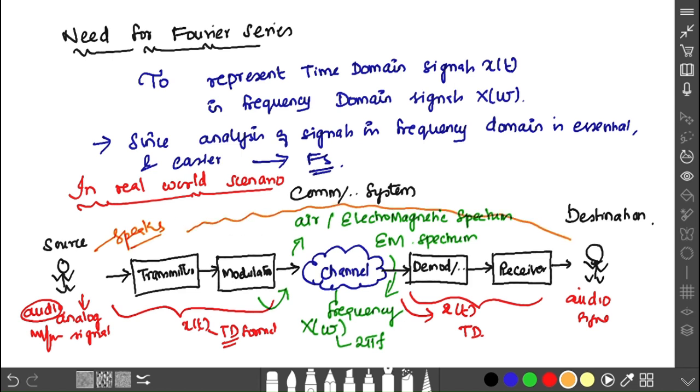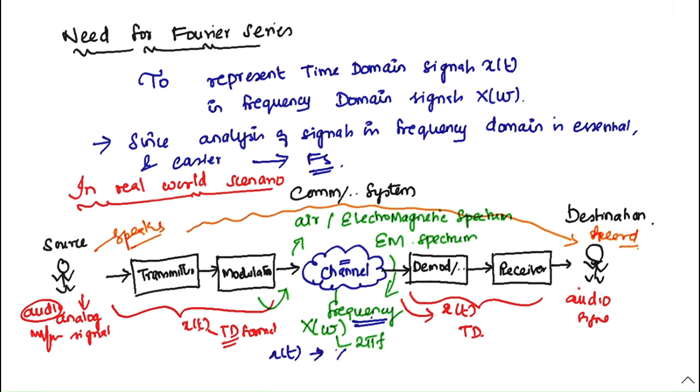This analog signal, a format of continuous time signal X(t), must be converted. The channel medium—air or electromagnetic spectrum—considers the signal in terms of frequency domain only. The conversion process from X(t) time domain to frequency domain is very important in real-world scenarios.